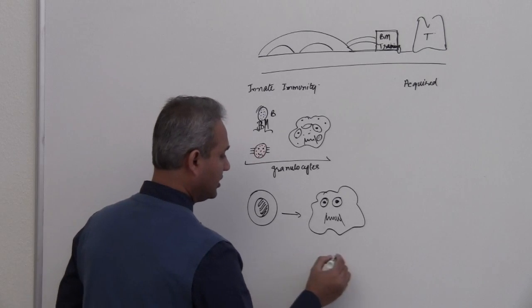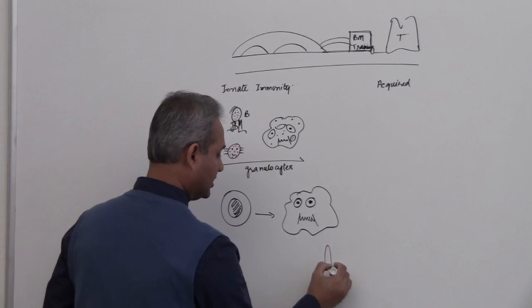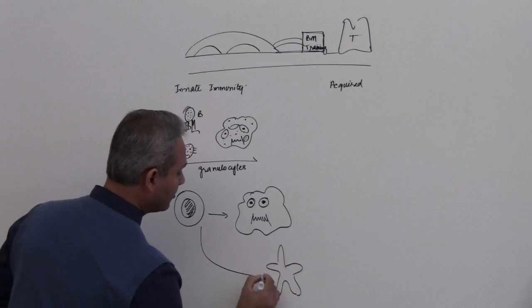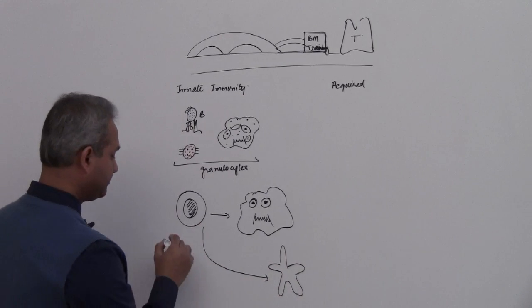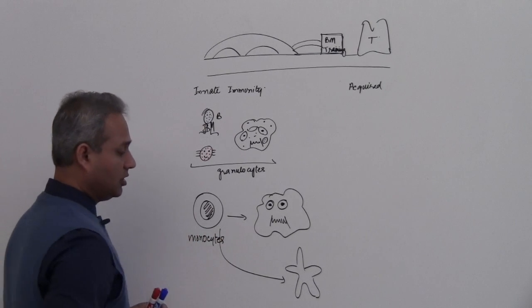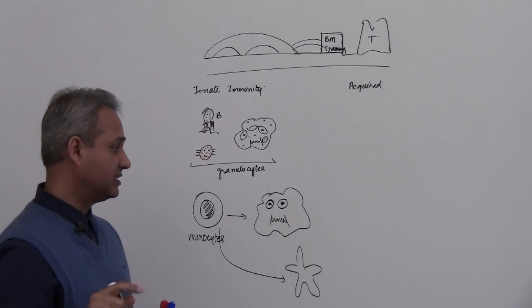And then we have dendritic cell. We talked about it last time. Dendritic cells are really also coming from the monocytes. They also are originated from the monocytes.